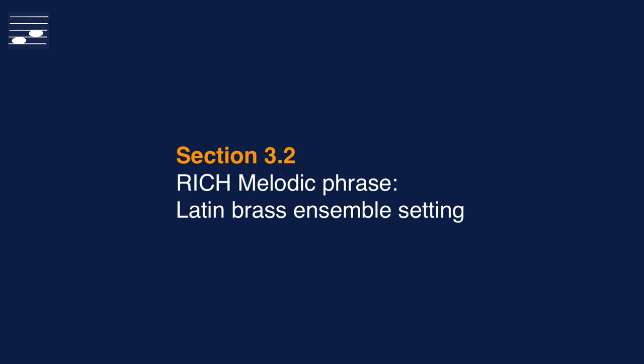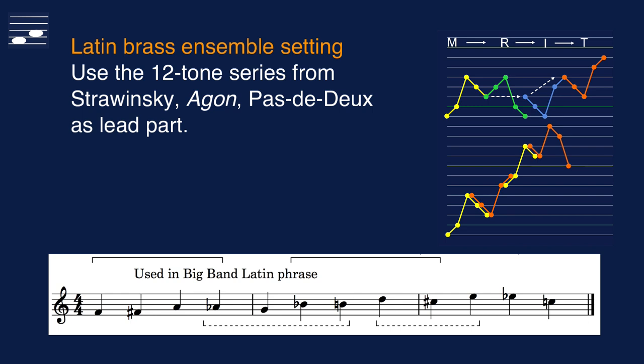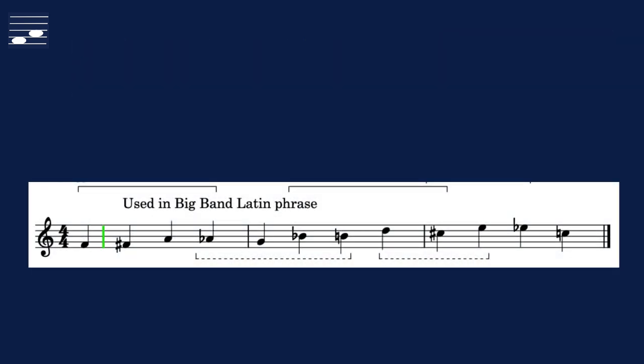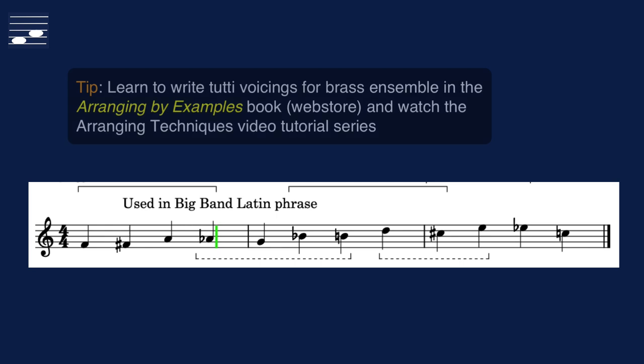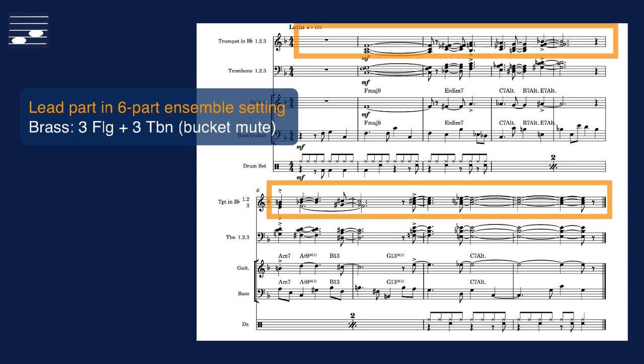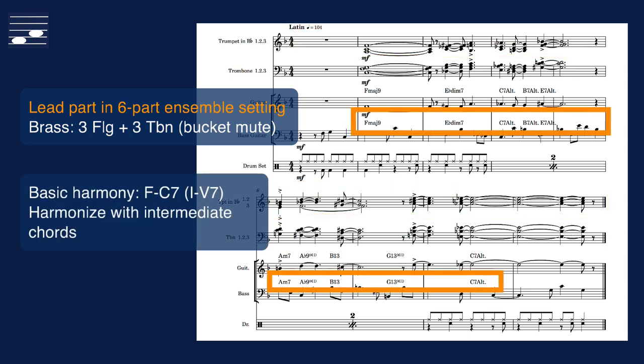The second melodic application of the RI chain is a Latin brass ensemble setting. As promised, we return to the Stravinsky 12-tone series from the Pas de Deux in Agon. The full chain will comprise four subphrases. This series becomes the lead part in the tutti voicing for three flugelhorns and three bucket mute trombones. The melody phrase is harmonized in the key of F major and the basic harmonic framework is a half cadence from tonic to dominant C7.